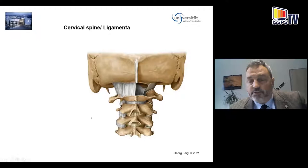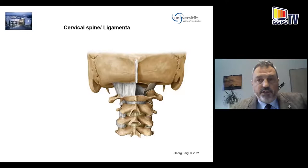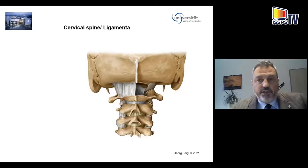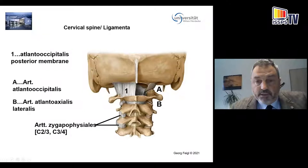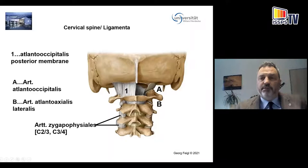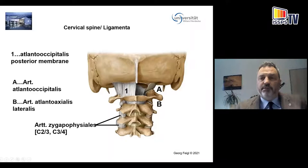What's more important is that there is the dorsal branch, and if an injection is positioned there you will reach these nerve branches as well. So you get this membrane, you get the atlantooccipital joint and the atlantoaxial joint in this area. You can see the zygapophysial joint, which is somewhat different from the others in the cervical spine, and then the zygapophysial joints of C2-3 and C3-4.